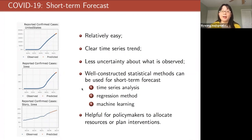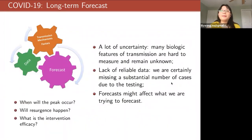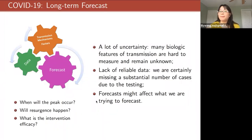Short-term forecasting is very important for policy makers — they can use it to allocate resources or plan interventions for the short term. But policy makers and decision makers are also very interested in long-term forecasting, especially about epidemiological dynamics: when will the peak occur, when will the resurgence happen, and what is the intervention efficiency? To answer these questions we need long-term forecasts, and long-term forecasting is much harder than many people think.